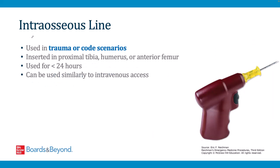Intraosseous (IO) lines are a type of access used in trauma or code scenarios. A needle is drilled into the bone using a drill device and is placed in the proximal tibia, humerus, or anterior femur. IO lines can only be used for less than 24 hours, but can be used similarly to IV access to give fluids and medications. Products delivered through an IO line go into the medullary portion of the bone, which is richly vascularized and drains into the venous system.